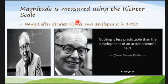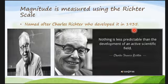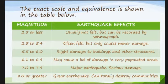Magnitude is measured using the Richter scale, developed by Charles Richter in 1935. A magnitude of 2.5 or less is usually not felt but can be recorded by a seismograph. Magnitude 2.5 to 5.4 is often felt but only causes minor damage. Magnitude 5.5 to 6 causes slight damage to buildings and other structures.